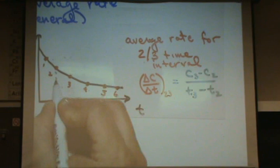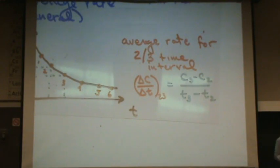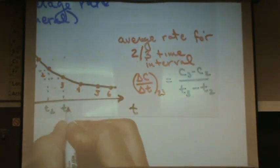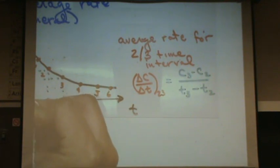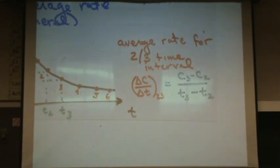So you need to find these points on the xy axis. Read them off. This would be t2, t3, c3, and c2. And then you could get the average rate.